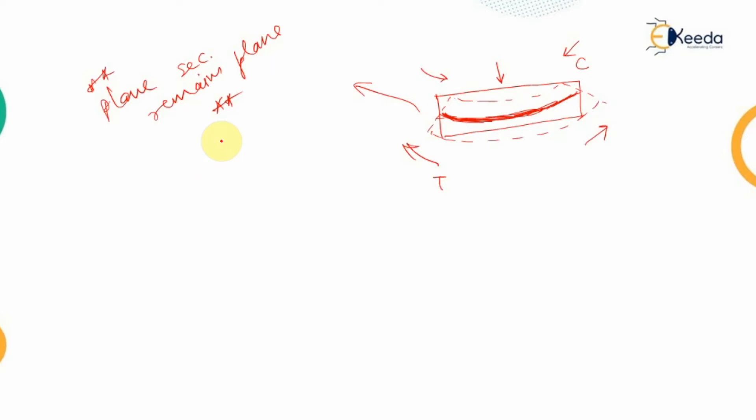This equation does not hold good in the case of the shear lag effect. In reality, the shear strain produced by different forces generates deformation in the neutral axis as well, so the plane section does not remain plane. The bending stresses in the flange are not uniform, because of which the section tries to warp up.